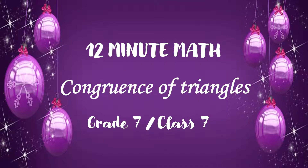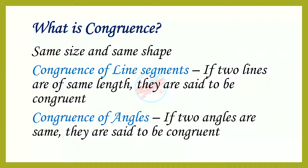Congruence of triangles. What is congruence? Congruence means same size and same shape. Congruence of line segments: if two lines are of the same length, then they are said to be congruent. Congruence of angles: if two angles are the same, they are said to be congruent.